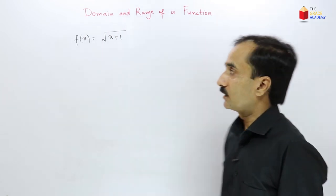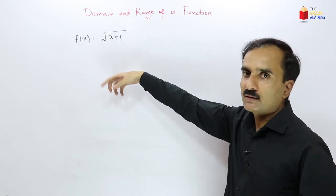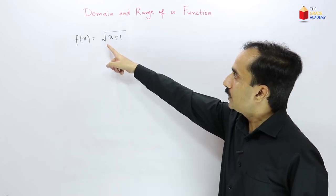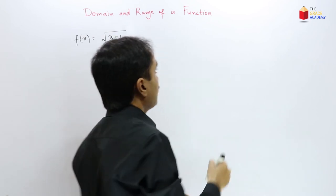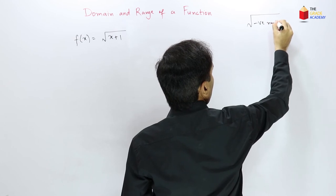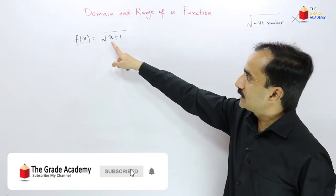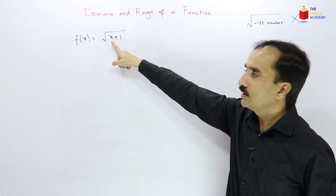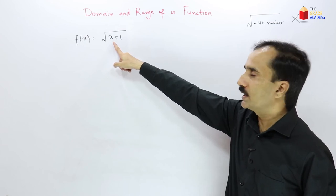Now let us find the domain and range of f(x) = √(x+1). For the square root function, we must ensure the expression inside is not negative — the square root of a negative number is undefined.